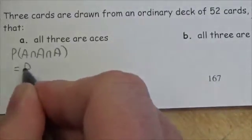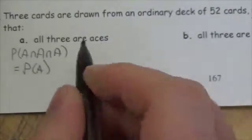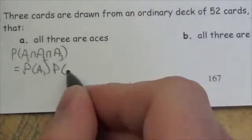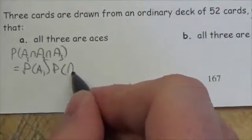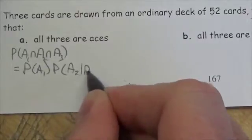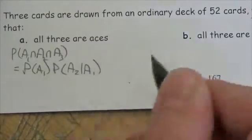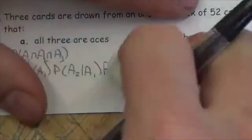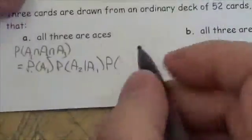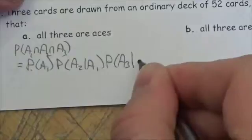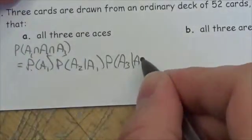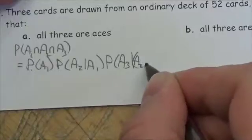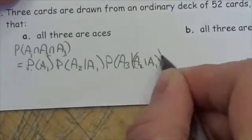This is going to be the probability that the first card is an ace, multiplied by the probability that the second card is an ace given that the first card is an ace, multiplied by the probability that the third card is an ace given that the first two cards were aces.